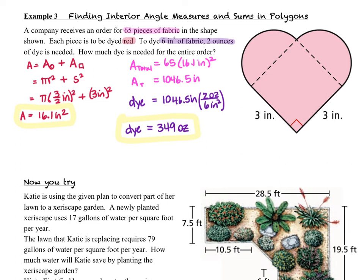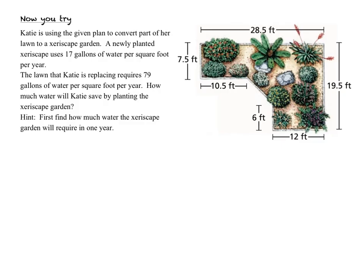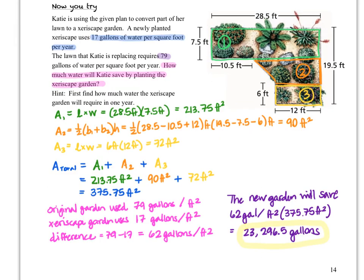This one wasn't hard, but we had to read the question carefully to know what we were supposed to be finding. Now work on the Now You Try — read carefully, determine what composite figures to use, and document your work neatly. Once you found the composite area, you needed to determine how much water each type of garden would need based on size and water usage. We found that ultimately using the new garden will save about 23,000 gallons of water per year.